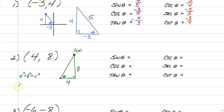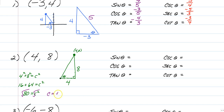We're going to have 16 plus 64 is equal to c squared. Add those together and we have 80 is equal to c squared. When you square root both sides, you must give an exact answer — no decimals. So you have to break down your 80, and you're going to end up with 4 root 5. If you do not remember how to simplify radicals, make sure you go back and figure that out. So this is 4 root 5 for our hypotenuse.